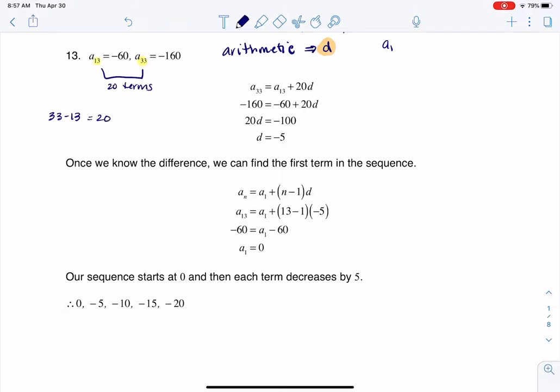So if I want to get from a sub 13 to a sub 33, I need to add 20 of those differences. And that's the formula that I'm setting up here. A sub 33 is my starting point of a sub 13 plus 20 differences. And so I'm going to plug in negative 160 for a sub 33, negative 60 for a sub 13, and then I can solve for d, and I get d is equal to negative 5.